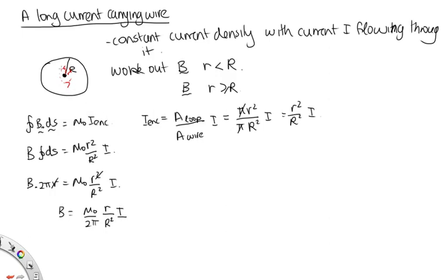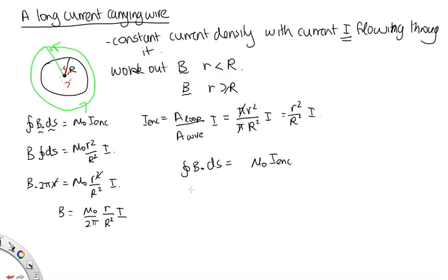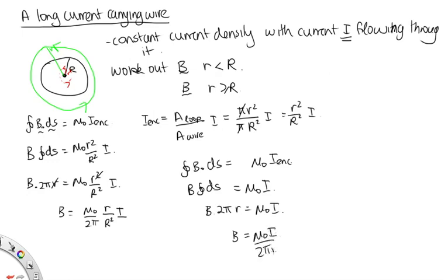Now for r greater than or equal to R outside the wire, taking a path at radius r: B dot dS = μ₀ I_enclosed, and the enclosed current is just I. Pulling B out: B times 2πr = μ₀ I, so B = μ₀ I over 2πr. That's in very few lines of working compared with the Biot-Savart law. So when we can use Ampere's law, it's very powerful and saves us a lot of time.